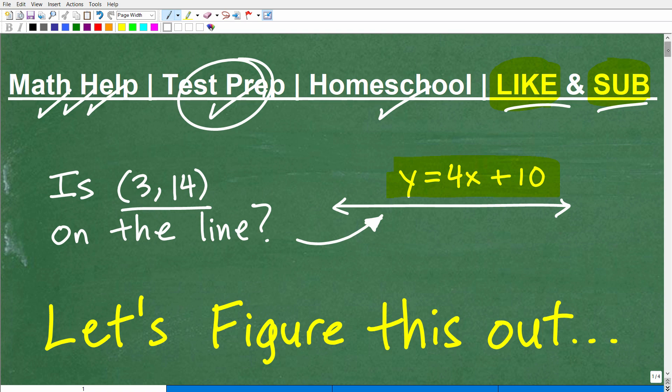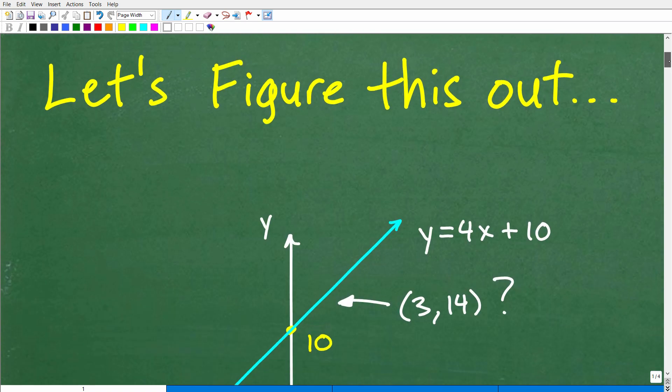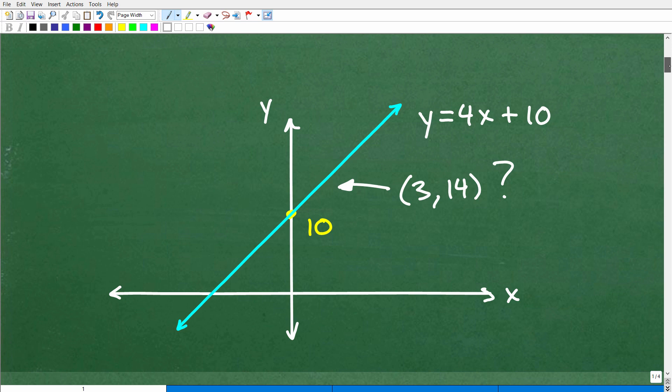And we are talking basic algebra, stuff that you would even see at the pre-algebra level. All right, so how can we determine whether the point (3,14), okay? And this is what we would call an ordered pair. Remember, it's an XY point that you could plot on the XY plane, a Cartesian plane here.